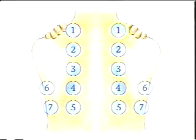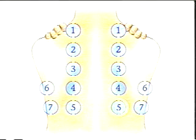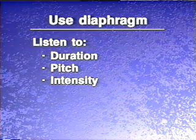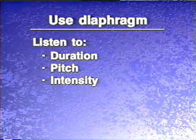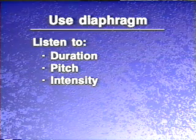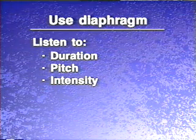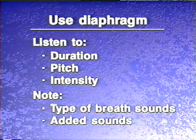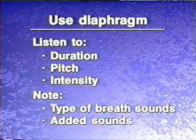To auscultate the posterior thorax, begin at the apices and proceed downward, moving systematically from side to side and comparing the sounds in symmetrical areas. Using the diaphragm of the stethoscope, listen to at least one entire breathing cycle at each location. Listen to the duration, pitch, and intensity of the inspiratory and expiratory sounds, decide what type of breath sounds you're hearing, and note any added sounds.